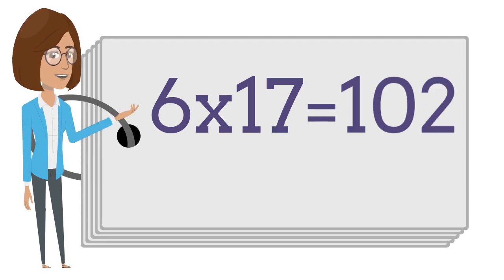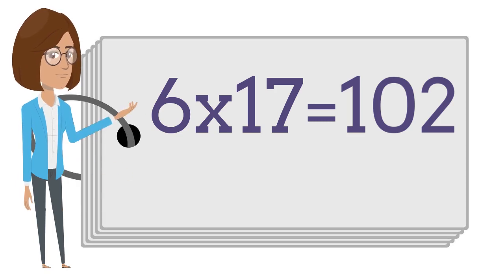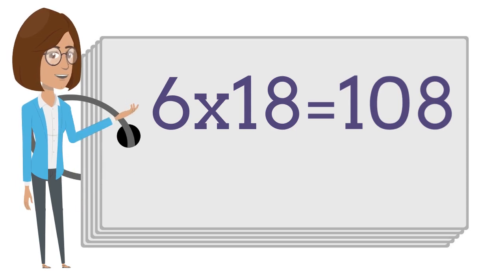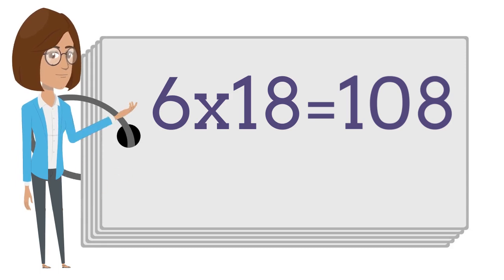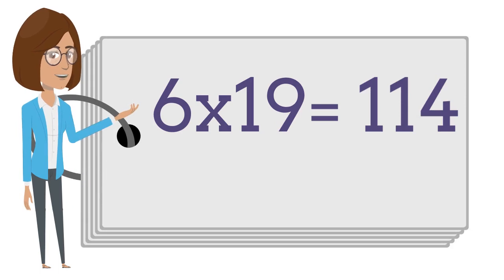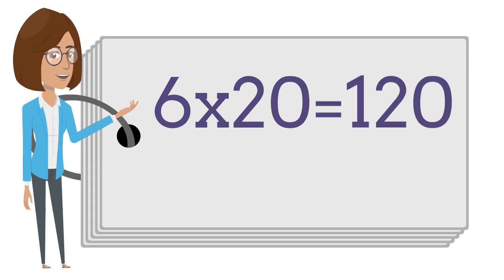Six times seventeen is one hundred and two. Six times eighteen is one hundred and eight. Six times nineteen is one hundred and fourteen. Six times twenty is one hundred and twenty.